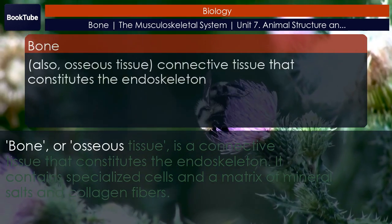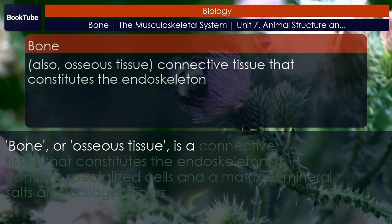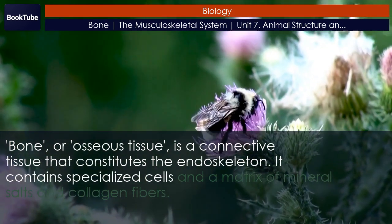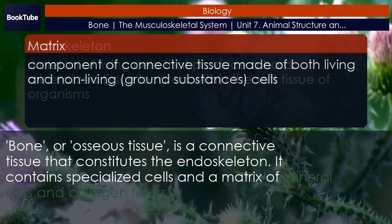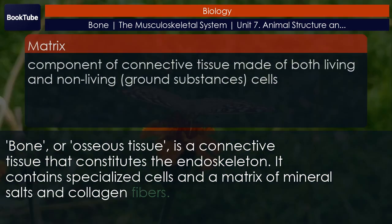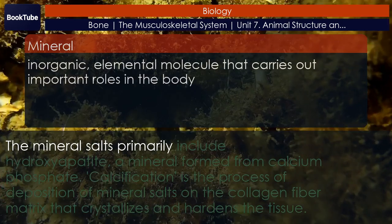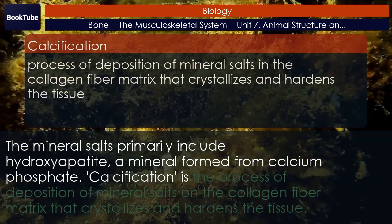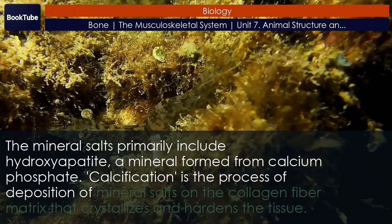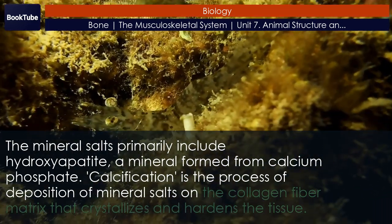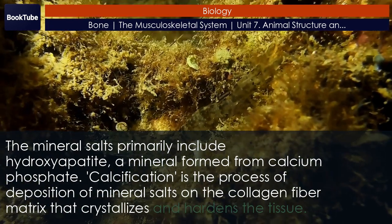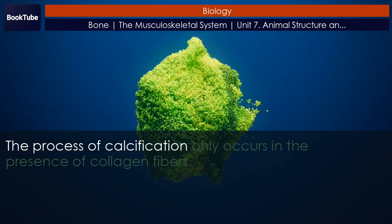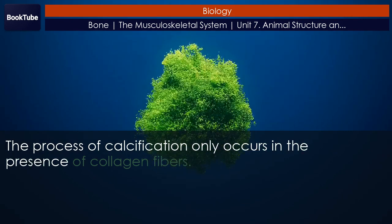Bone, or osseous tissue, is a connective tissue that constitutes the endoskeleton. It contains specialized cells and a matrix of mineral salts and collagen fibers. The mineral salts primarily include hydroxyapatite, a mineral formed from calcium phosphate. Calcification is the process of deposition of mineral salts on the collagen fiber matrix that crystallizes and hardens the tissue. The process of calcification only occurs in the presence of collagen fibers.